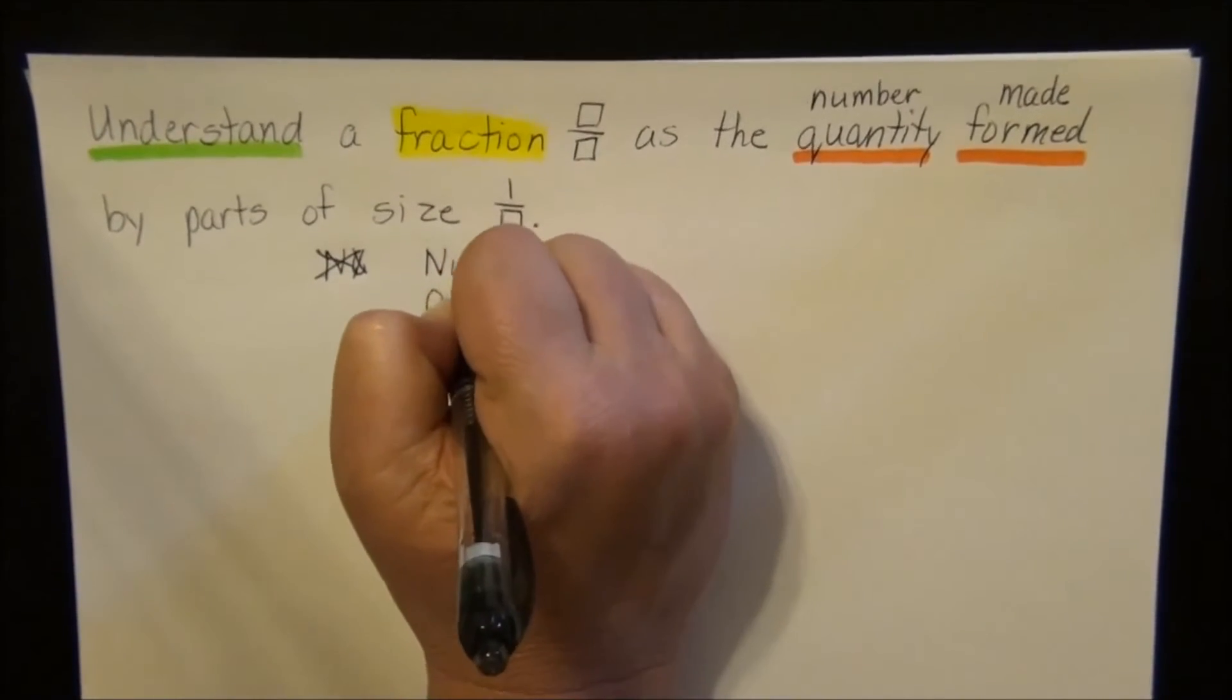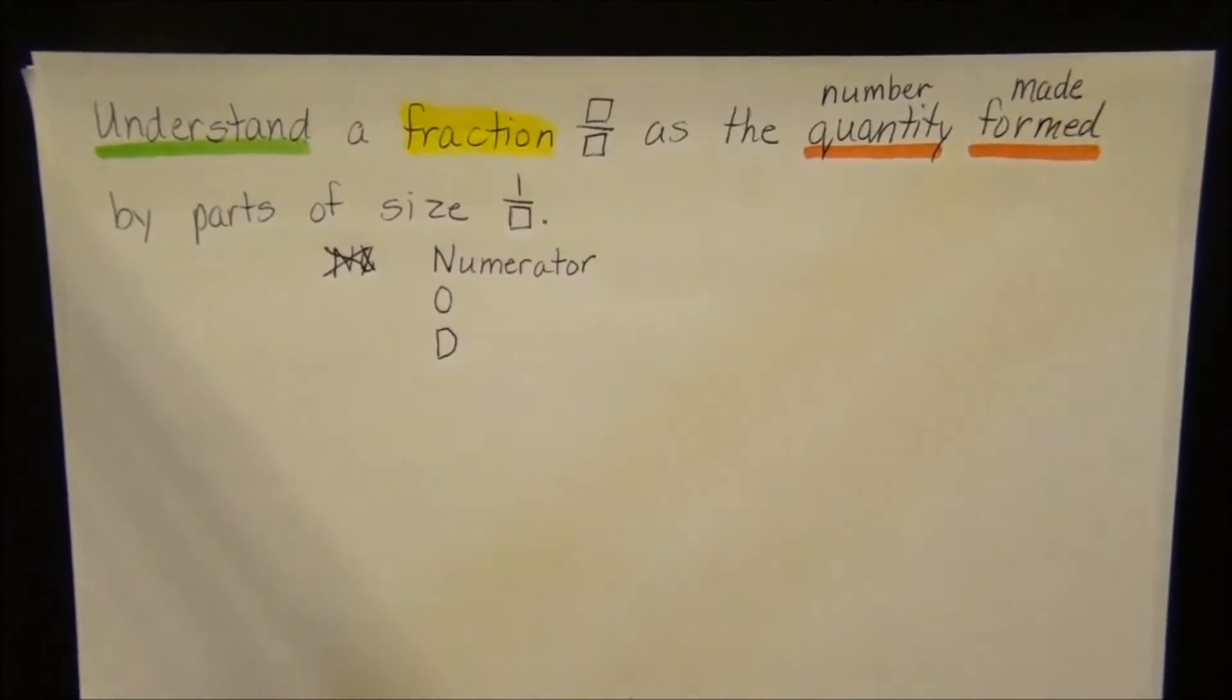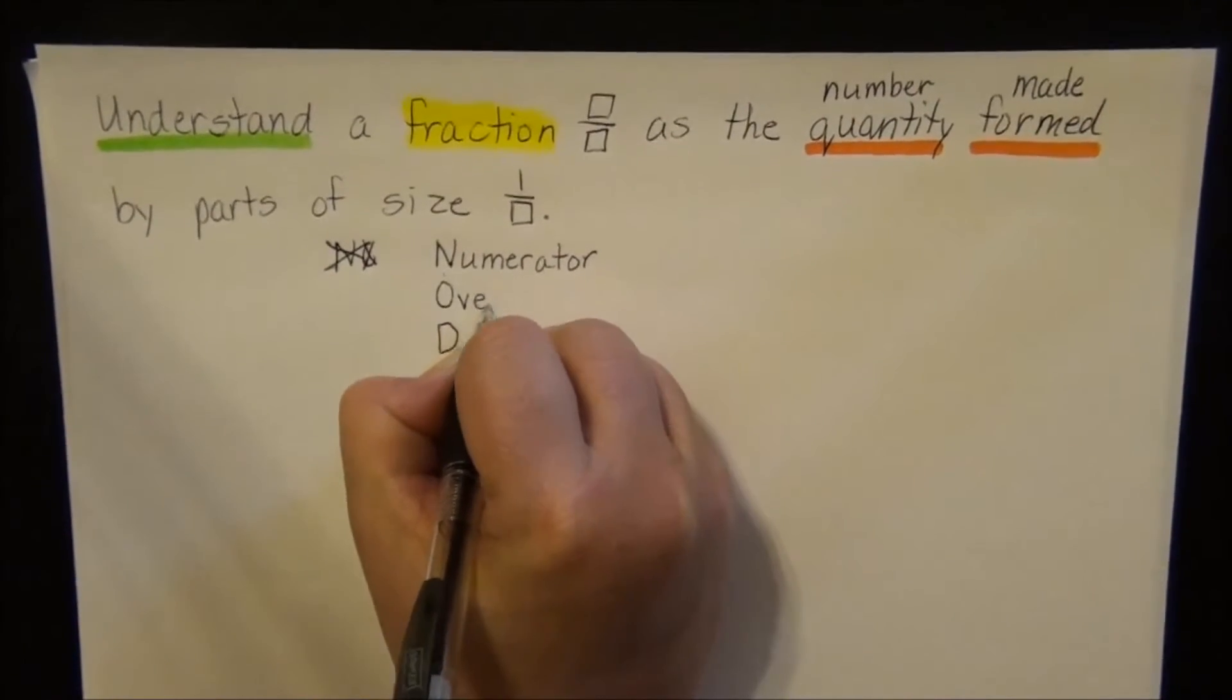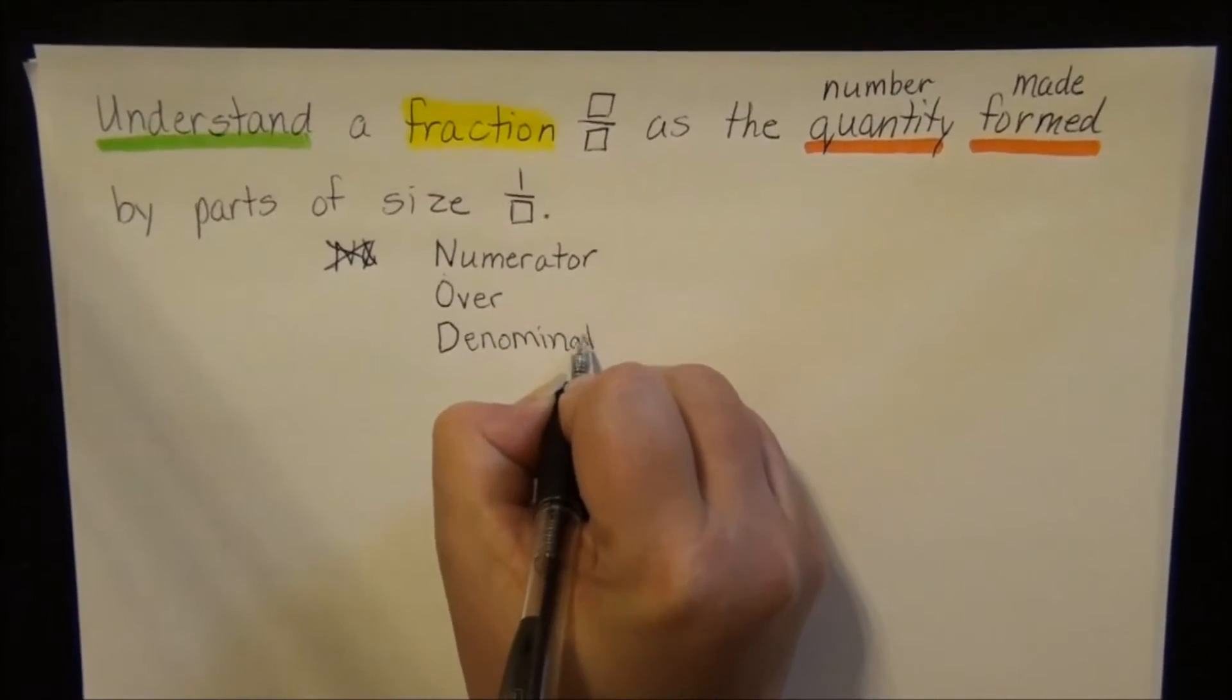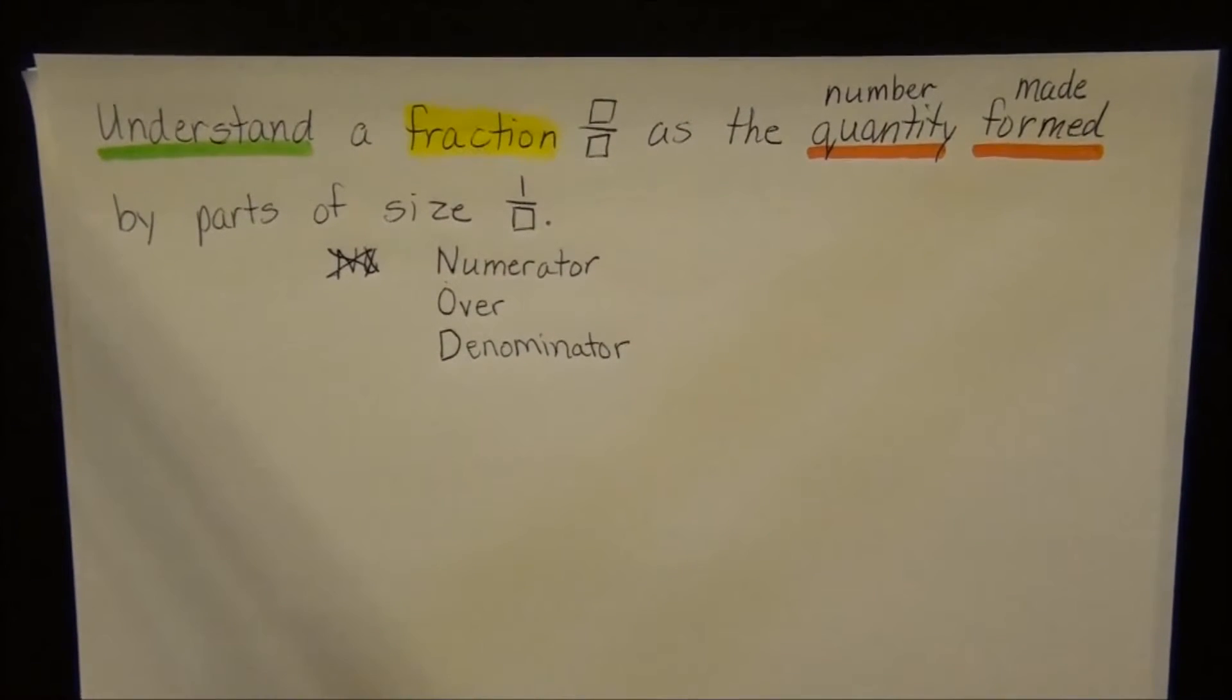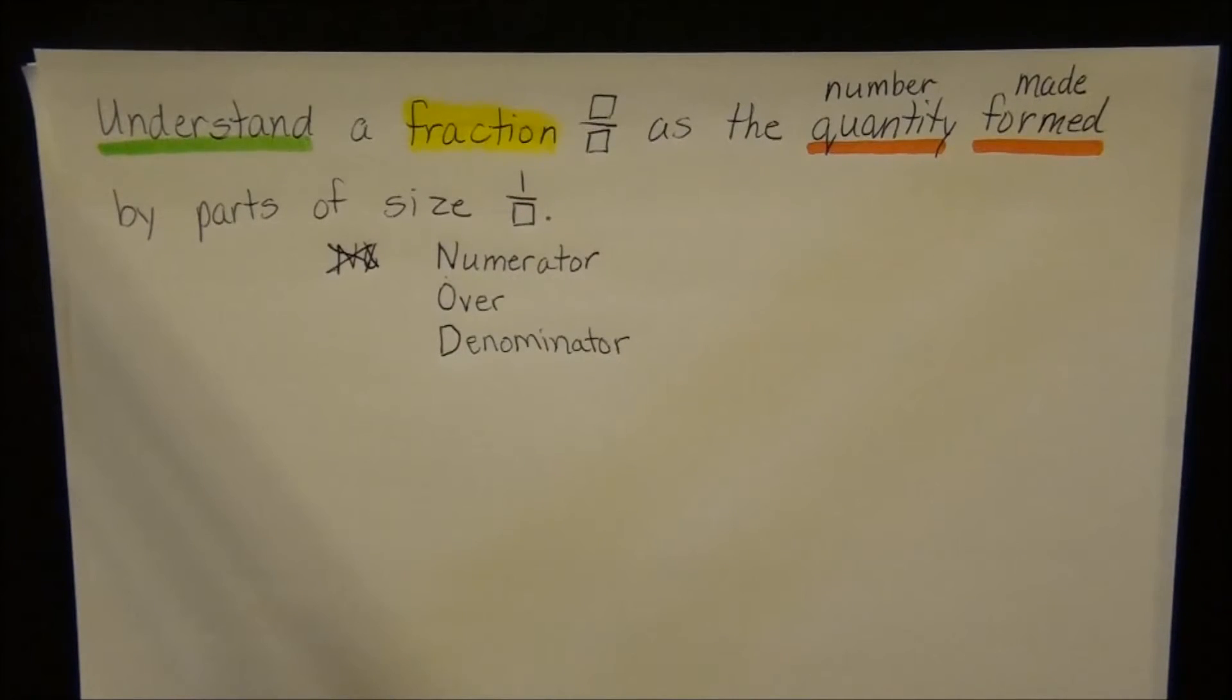N stands for the word numerator. So numerator over denominator. Now I am not showing you my head when I do this, but you can do it with me. I want you to move your head up and down. When it's up, I want you to say numerator. As it goes down, say over. And when you're looking down, say denominator. So look up at your ceiling and say numerator. Look front to the computer and say over. And look down at your belly button and say denominator. Numerator over denominator.